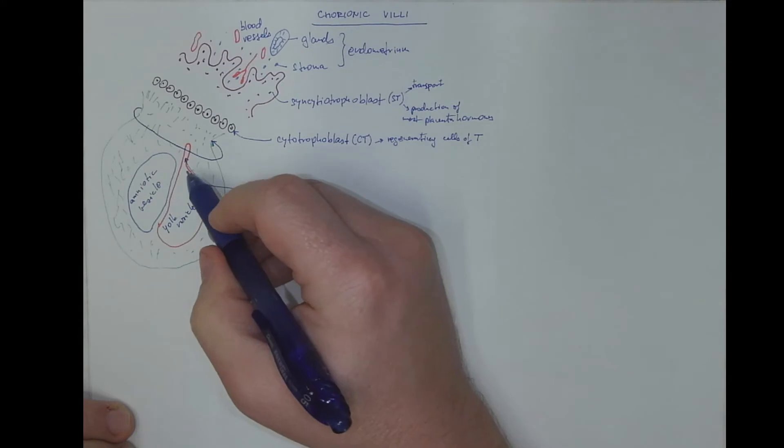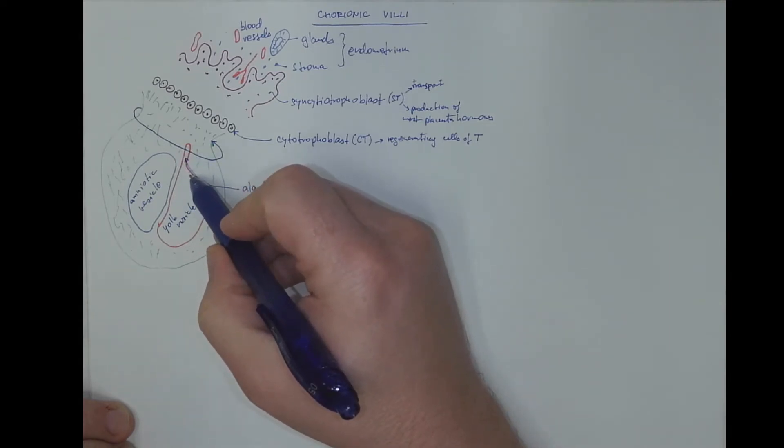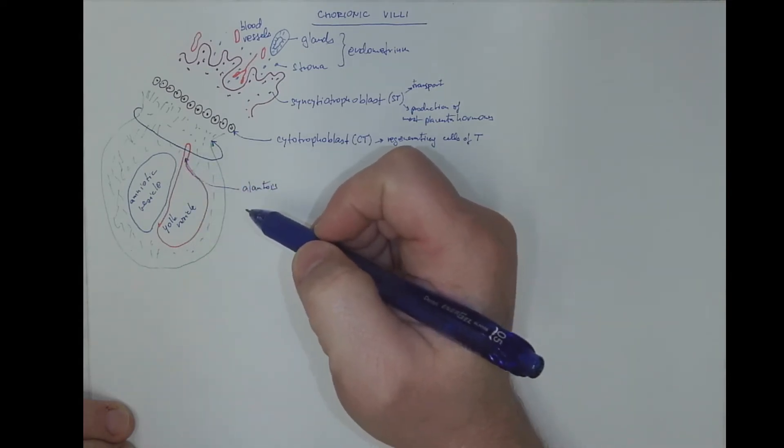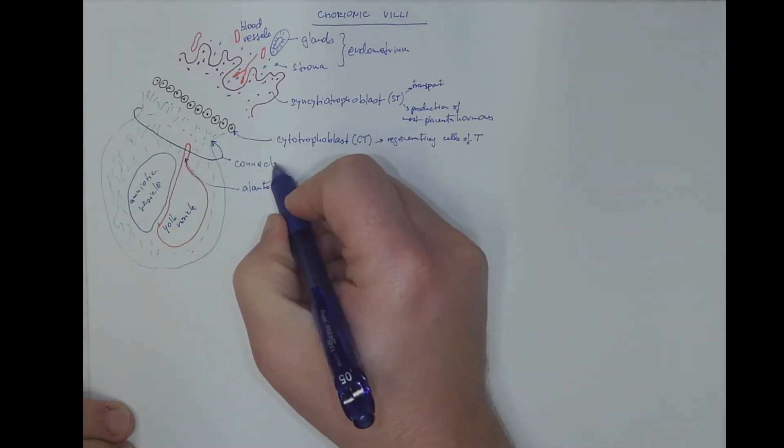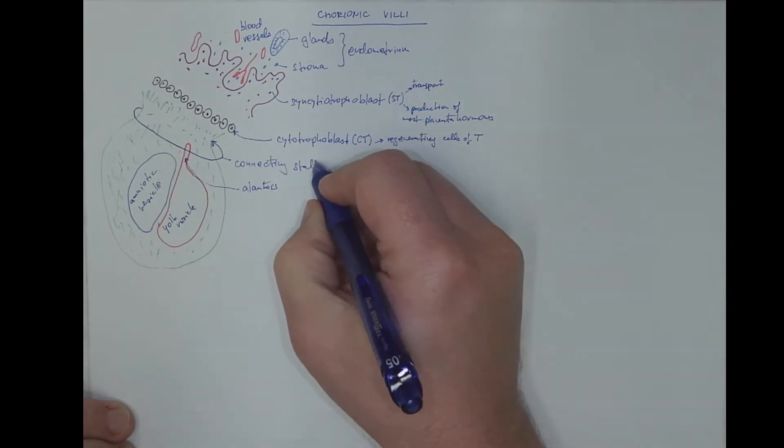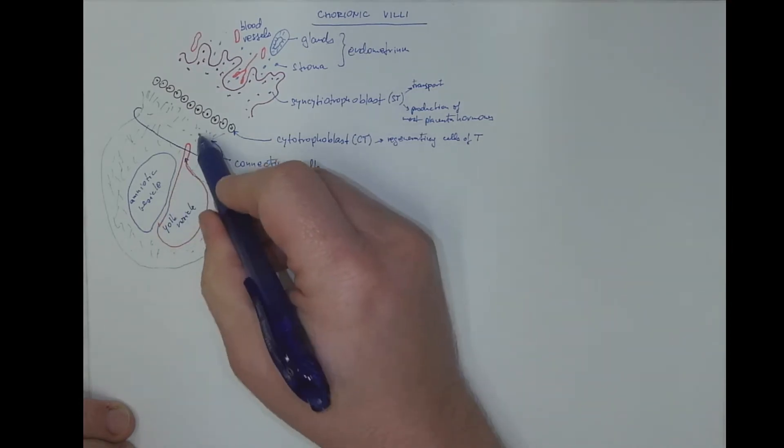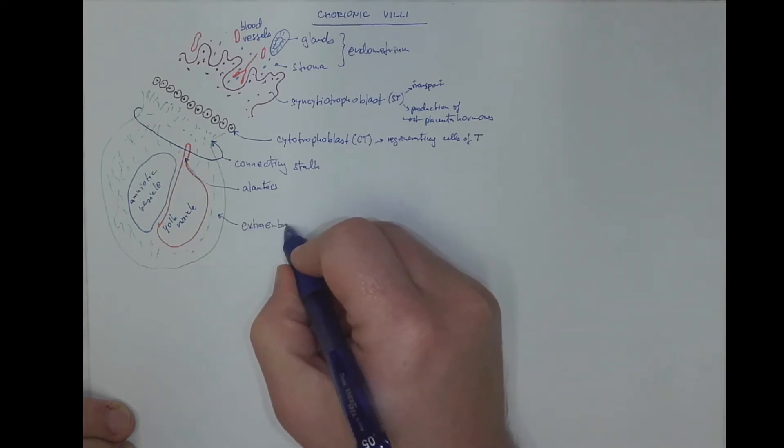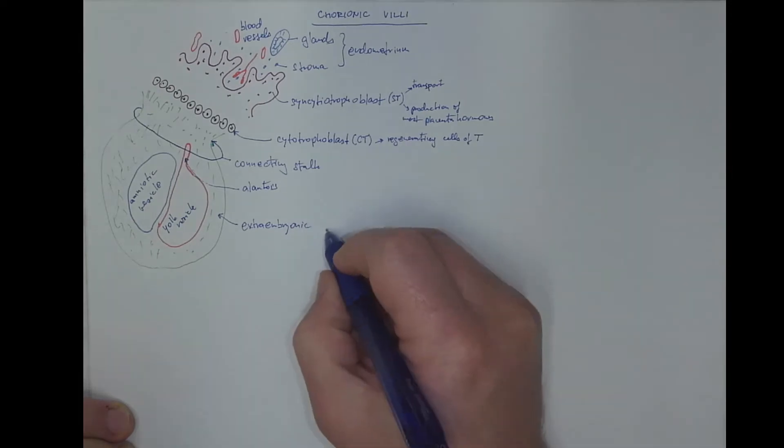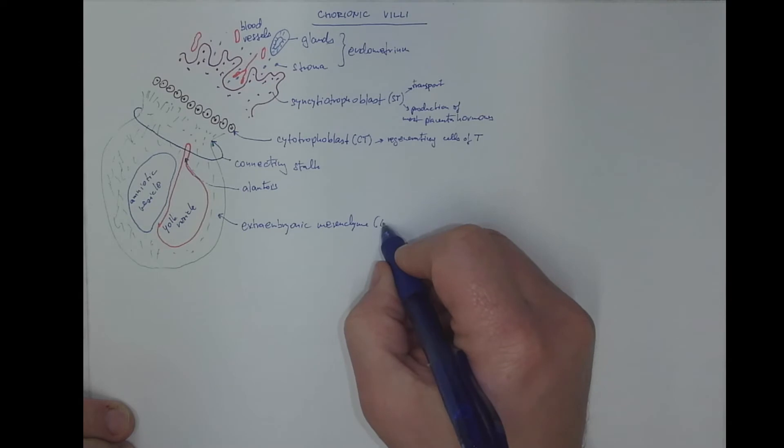The allantois is a rudimentary fetal membrane. And this is the connecting stalk that connects the vesicles to the wall of the chorion. Both vesicles are embedded within the extra embryonic mesenchyma, abbreviated as EEM from now on.